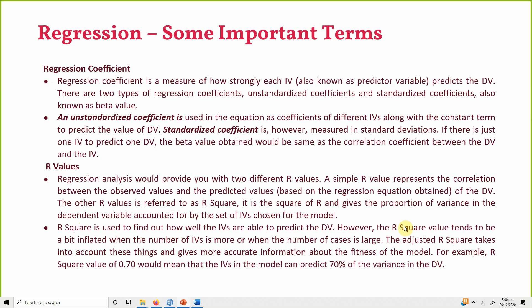However, the R-square value tends to be a bit inflated when the number of IVs is more or when the number of cases is large. The adjusted R-square takes this into account. When you have more IVs and a large number of cases, you might have a higher R-square value, so you can use the adjusted R-square instead.